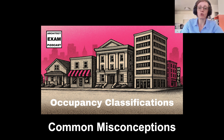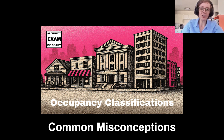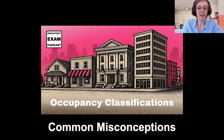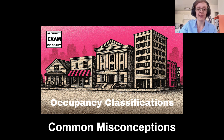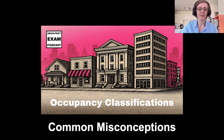For remembering key distinctions, try these associations: Assembly A is for audience. Business B is for busy workers. Educational E, elementary school. Factory F is for fabrication. High hazard H is for hazardous. Institutional I is for incapacitated or incarcerated. Mercantile M, remember it as merchandise. Residential R, resting or sleeping. Storage S, stuff. Utility U, unoccupied mostly. These are easy ways to remember these occupancy types.